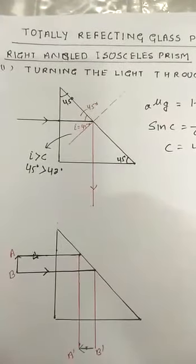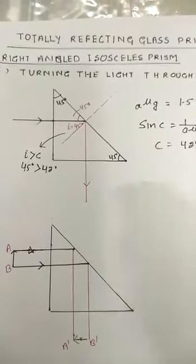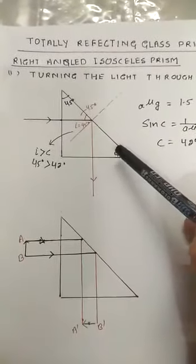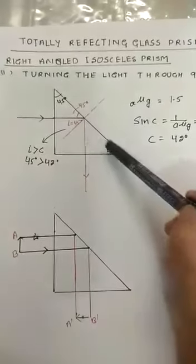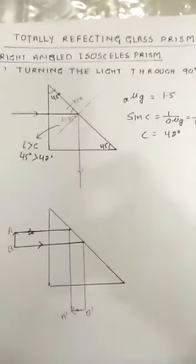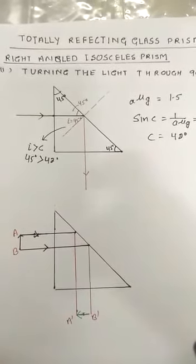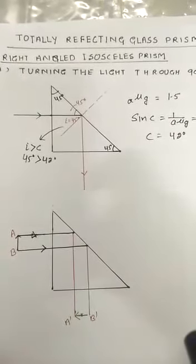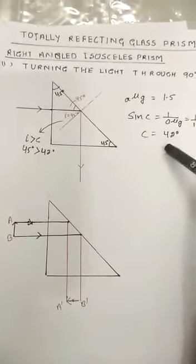Now there are certain applications of total internal reflection. One is the isosceles right-angled prism. It is isosceles, so both angles will be equal. It is a right-angled prism, so both angles are 45, 45 degrees. So by the use of total internal reflection, we can show how the ray deviates at 90 degrees by this prism. The material of this prism has refractive index 1.5, so the critical angle will be 42 degrees.